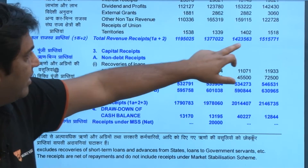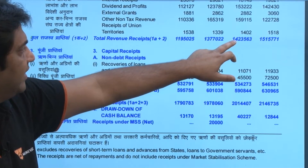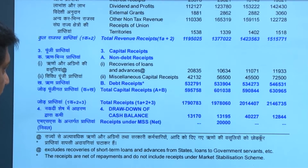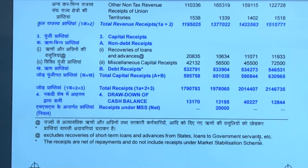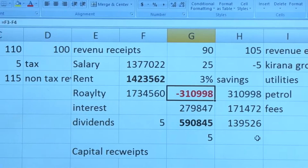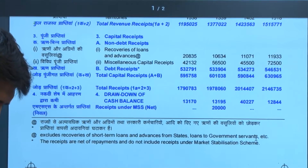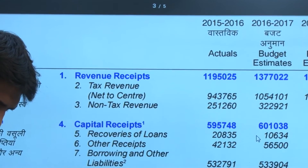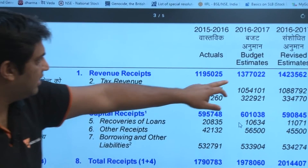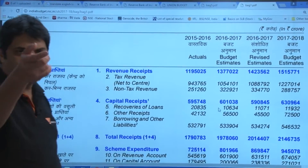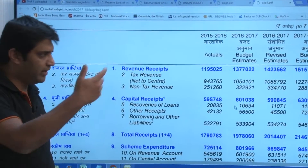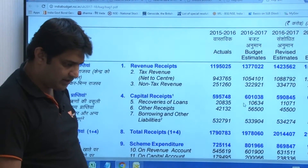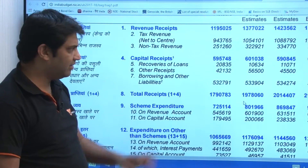Finally, after all of that, we get to see this figure — 1423563 — which we can see here. There will be a rounding error, so to that extent these numbers may not match exactly, but that's just rounding error.